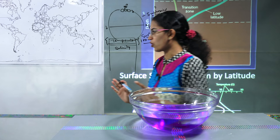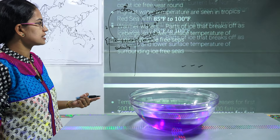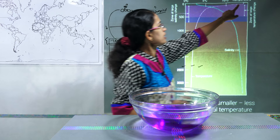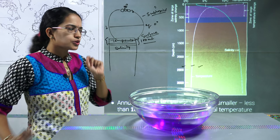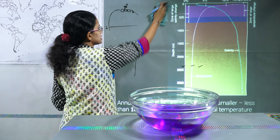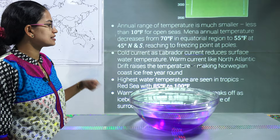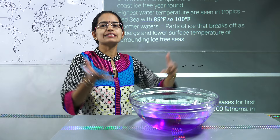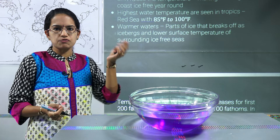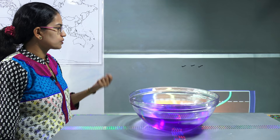Now coming on to temperature — the second important thing we try to understand in this lecture. This diagram shows a variation of temperature as well as salinity. Towards the polar areas, as the ice melts or the region gets warmer, the surface temperature would rise and the circulation patterns would start. Whenever we talk about the circulation of ocean currents, it is governed by various reasons.